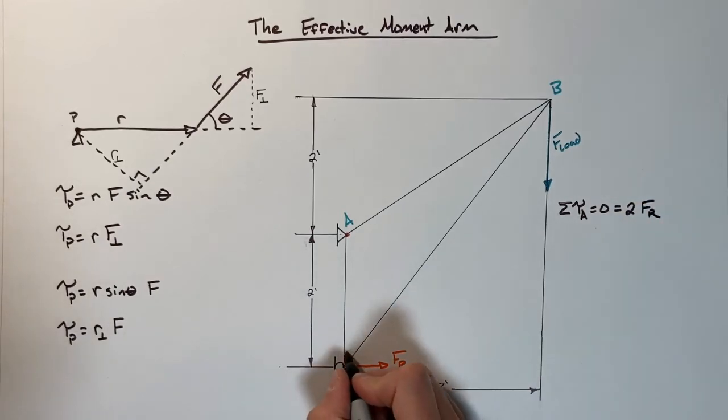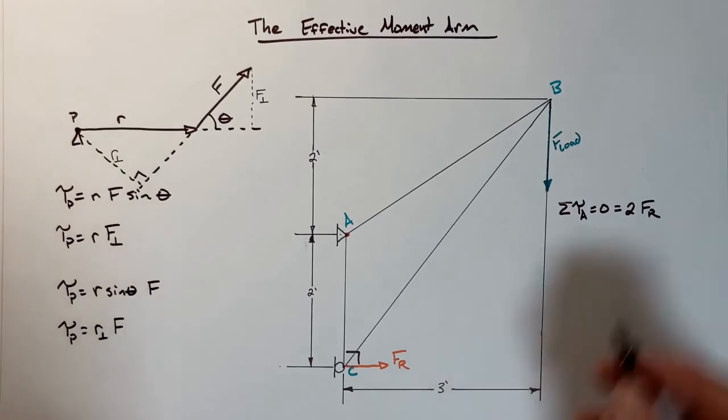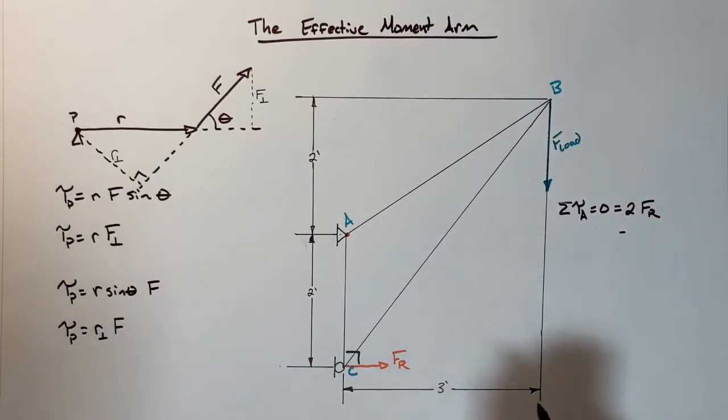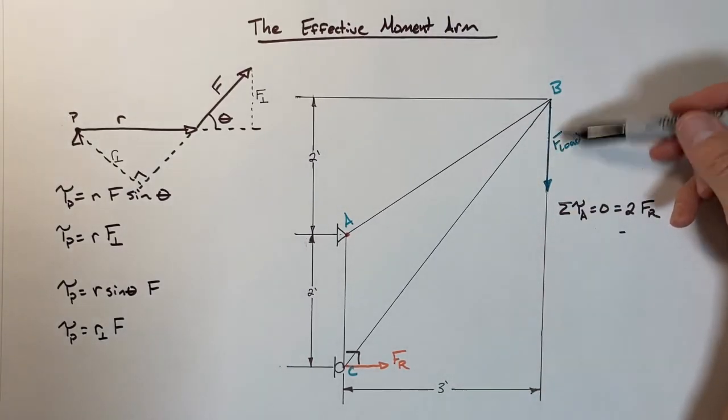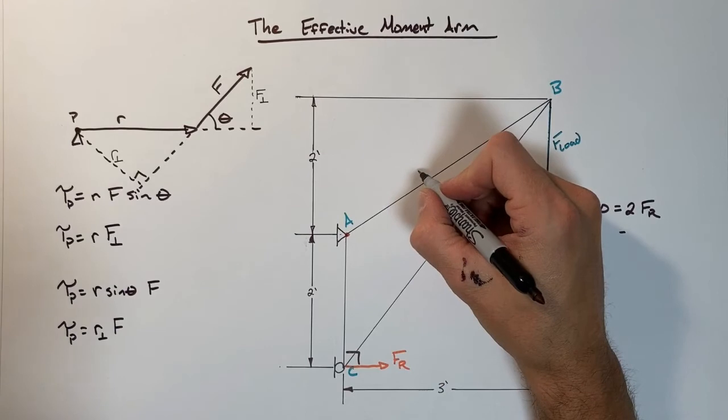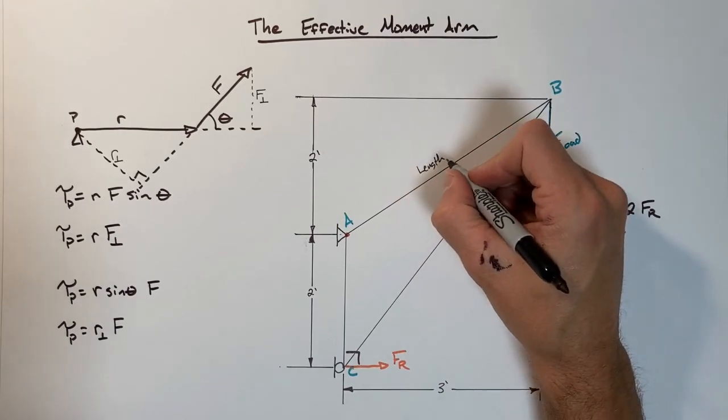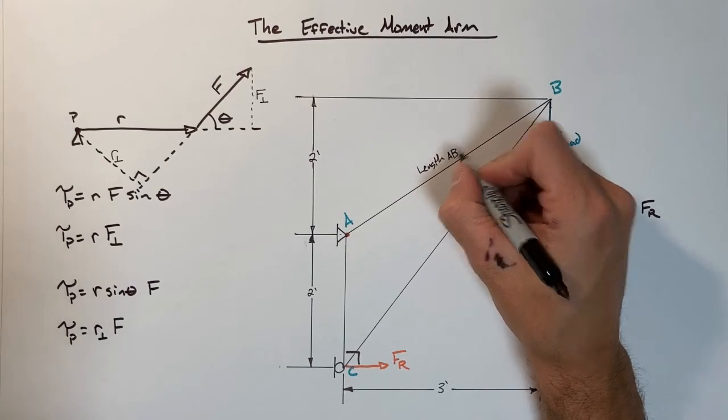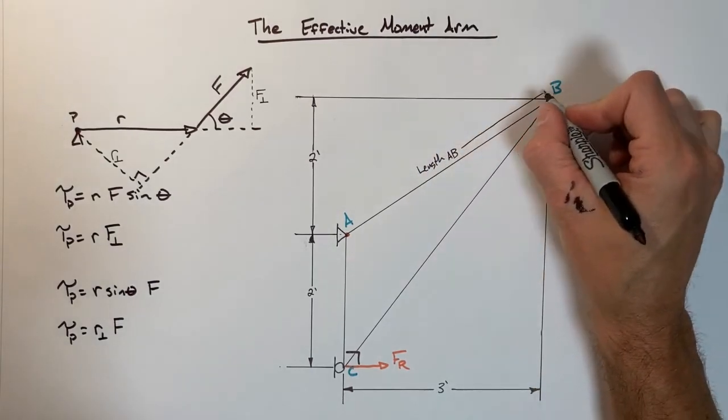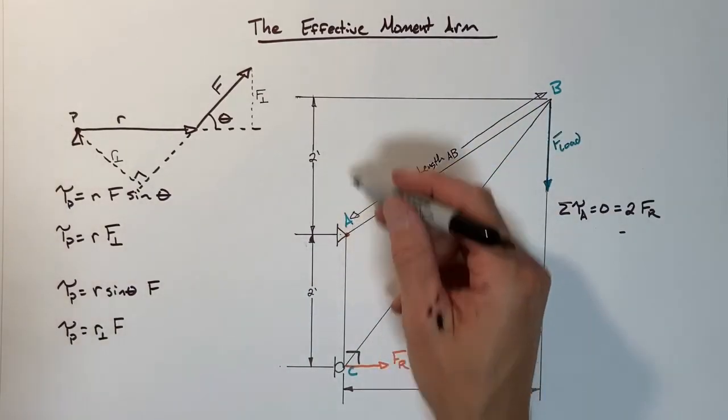Those torques are going to be the torque from the reaction force at point C. So at a radius of 2, we're going to have our force by the roller. Realize this is at a right angle to the radius vector, so we don't need to put in a sine term there. Then in the opposite direction we're going to have this force by the load.